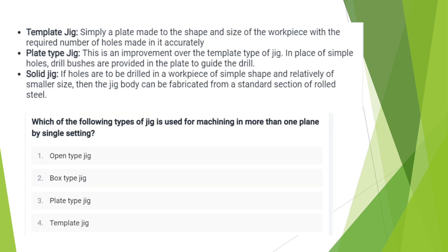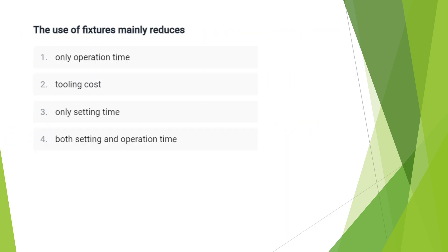The following type of jig is used for machining in more than one plane by single sitting — it is the box type jig, Option B. The use of fixtures mainly reduces setting time. Operating time and tooling time cannot be reduced; only setting time can be reduced.